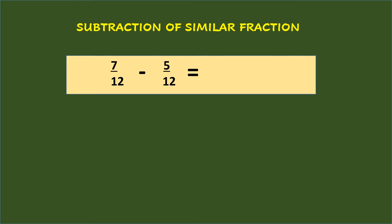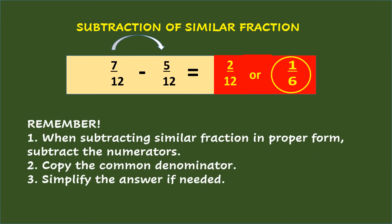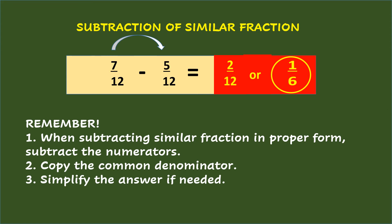When subtracting similar fractions in proper form, subtract first the numerators and copy the common denominator. So, 7/12 minus 5/12 equals 2/12, or simplifying it, is one-sixth. Remember: when subtracting similar fractions in proper form, subtract the numerators, copy the common denominator, and simplify the answer if needed.